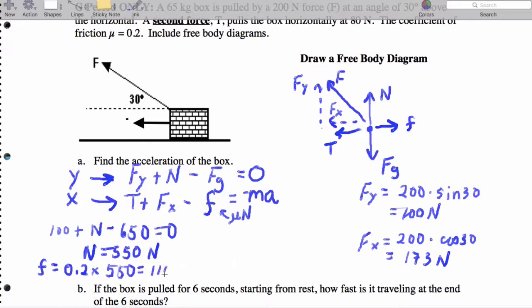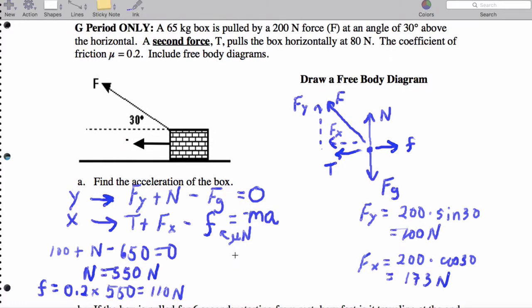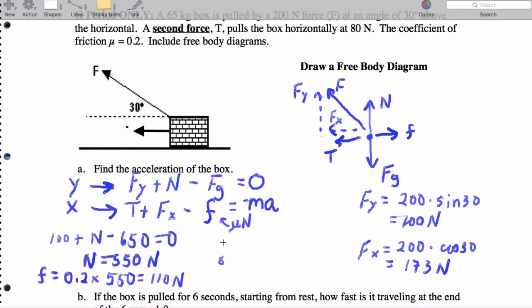Isn't that exciting? Now, in the horizontal direction, we have the tension, 80 plus 173 minus 110 equals 65 times A.